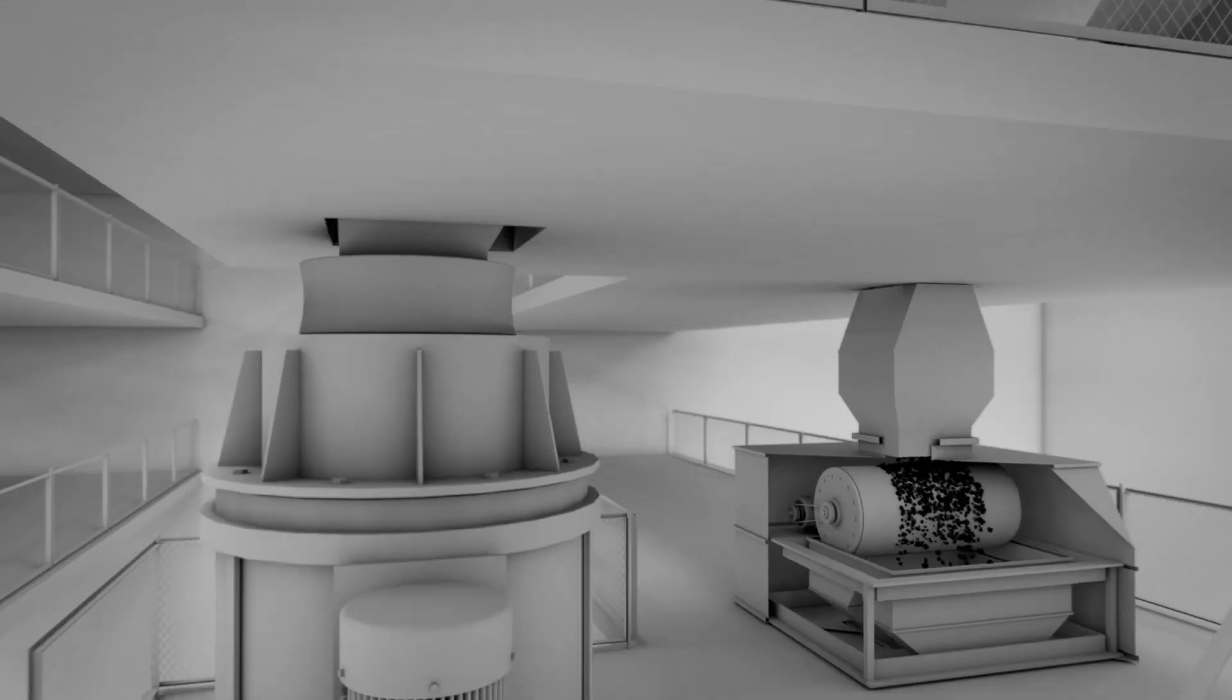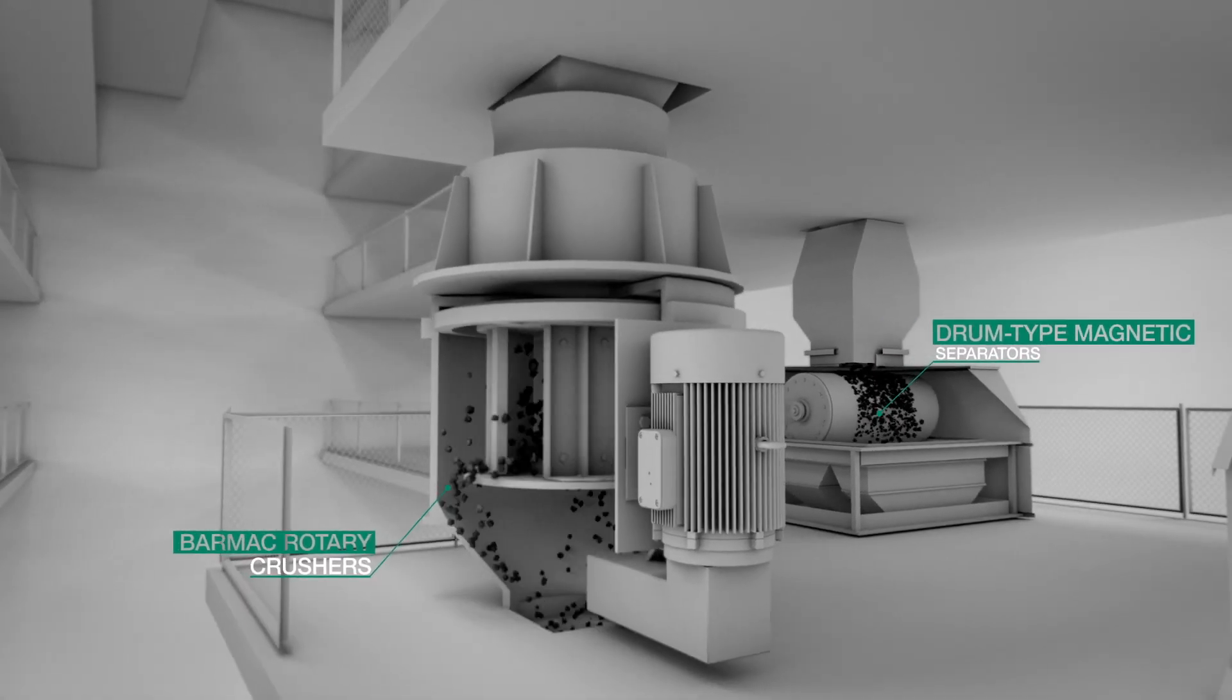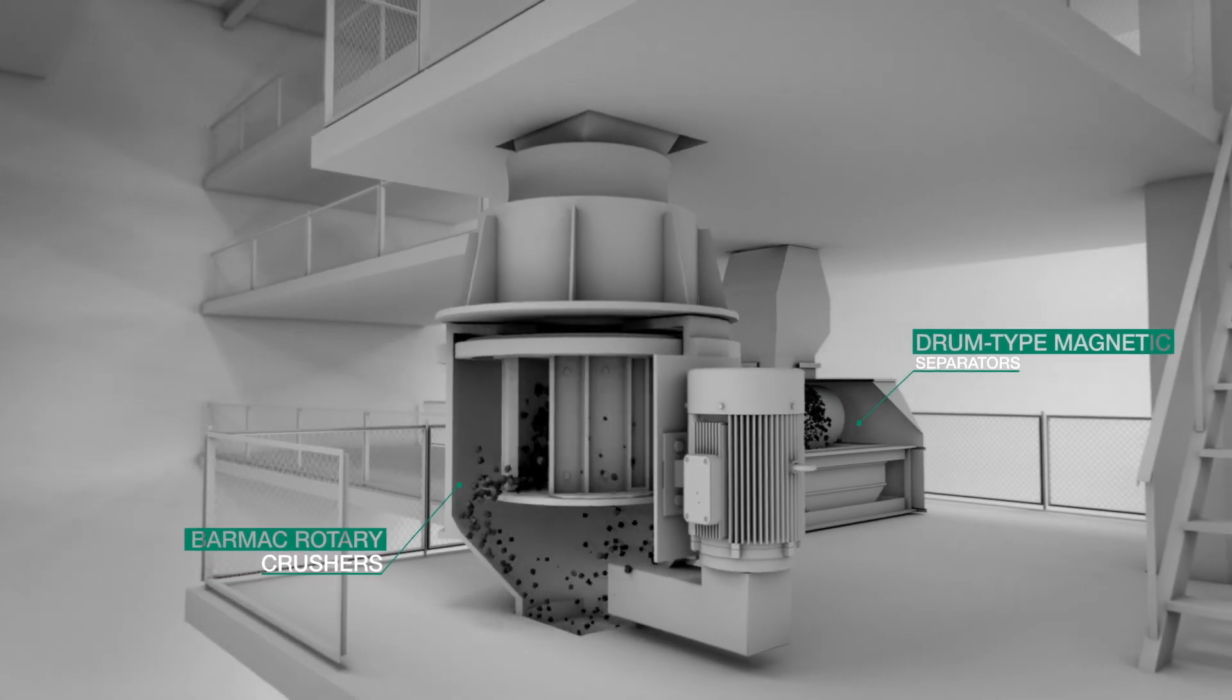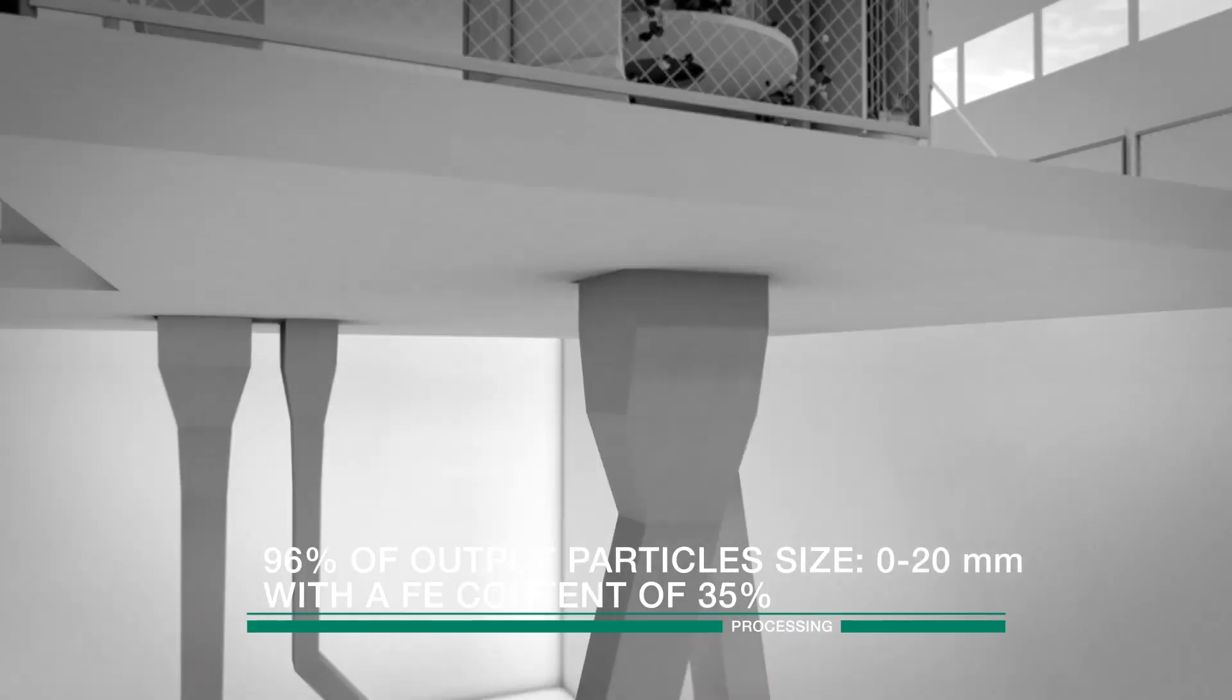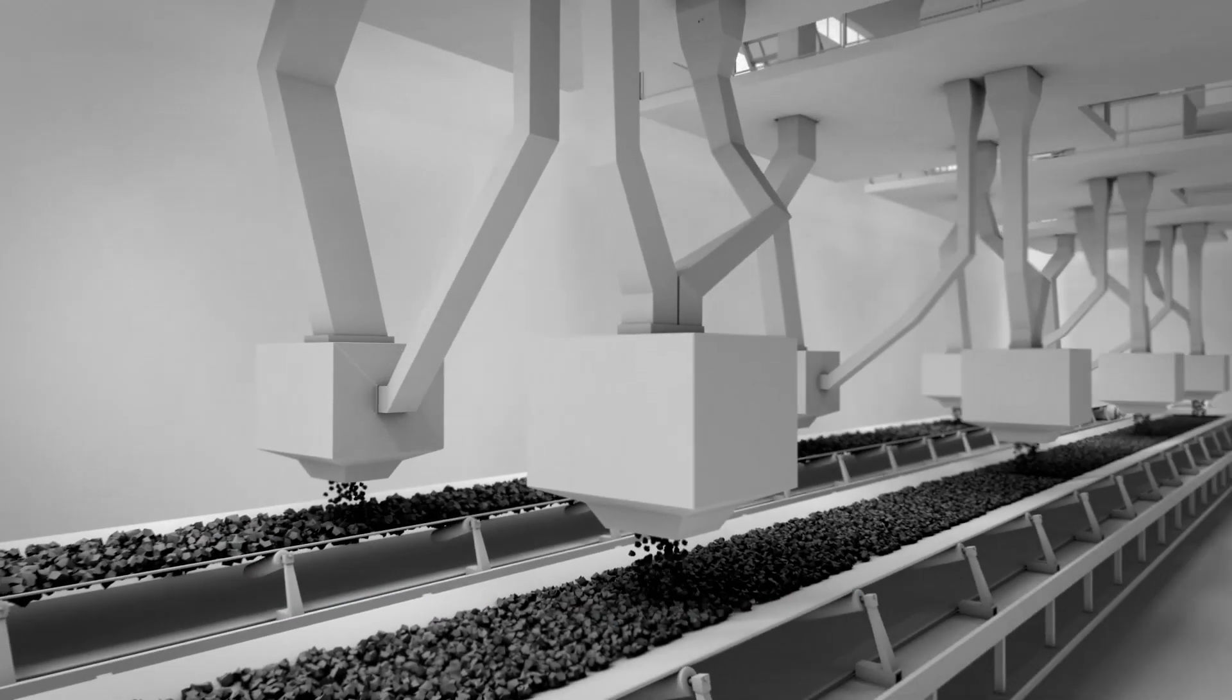The magnetic product is sent to the fourth stage, which uses Barmak rotary crushers. After this point, 96% of the crushed ore is less than 20 millimeters in size, and it is conveyed to the beneficiation complex.